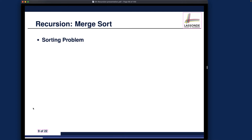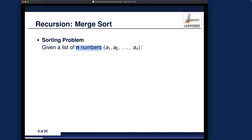This week let's go over merge sort. We are really trying to solve the sorting problem, which we already covered when we talked about selection sort and insertion sort. As a refresher: given a list of n numbers indexed a1, a2, all the way to an (or a0 to a n-1), the list can be a singly linked list, a doubly linked list, or an array. We'll focus on the idea first and then choose a data structure — in this case, the ArrayList from the Java library.